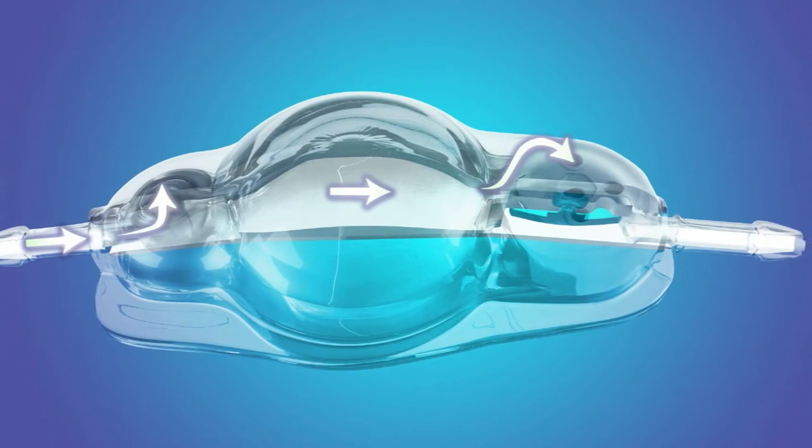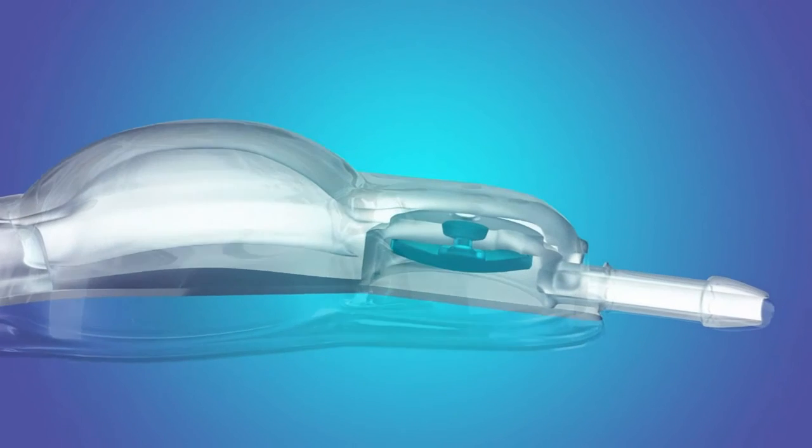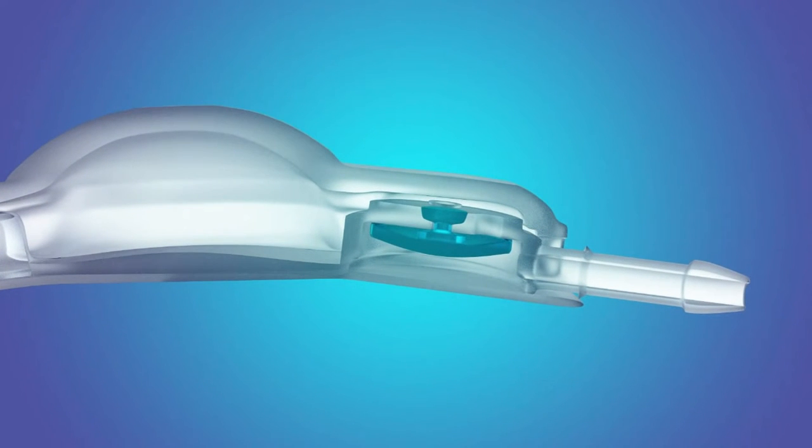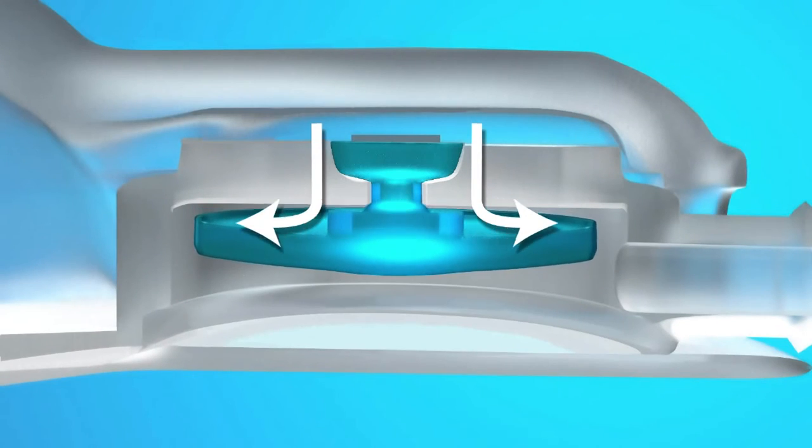From the reservoir, CSF flows through the valve mechanism flow holes. The inlet CSF fluid pressure causes the umbrella-shaped membrane to open when intracranial pressure ICP exceeds the resistance of the valve umbrella or membrane.